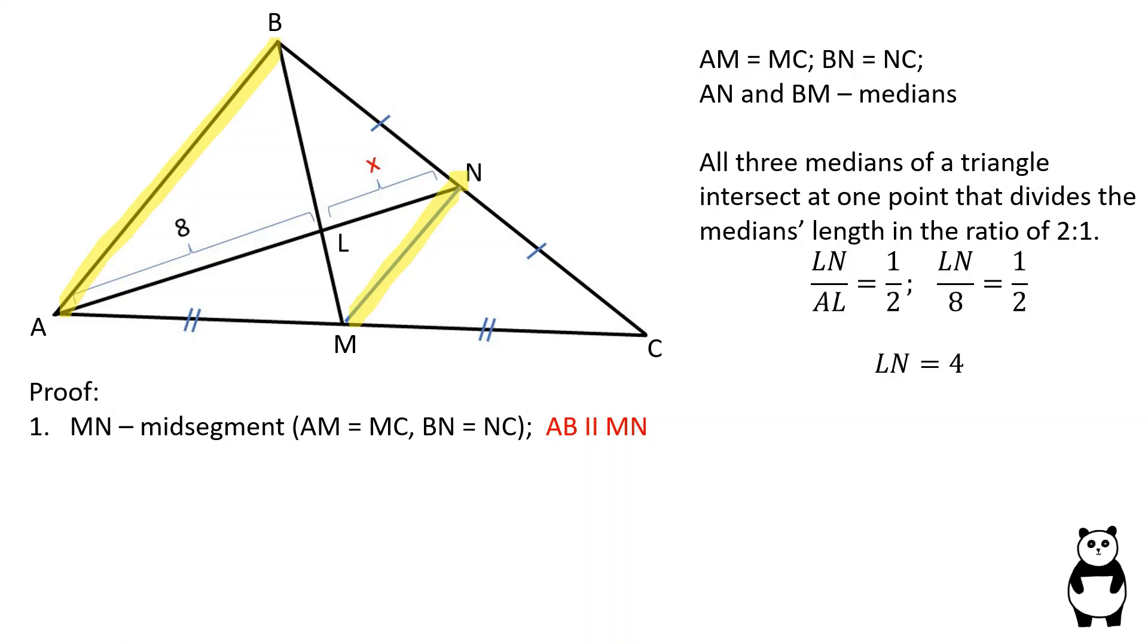Therefore, AB is parallel to MN and MN is half of AB. Therefore, MN over AB is equal to 1 over 2.